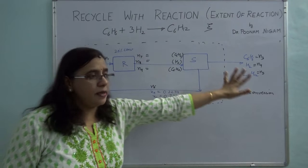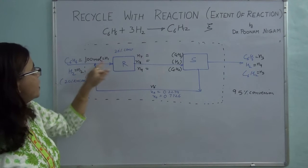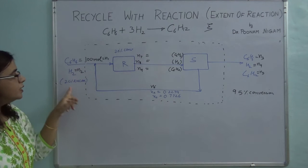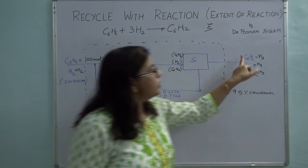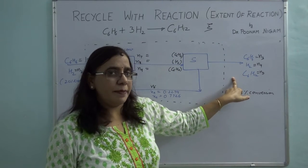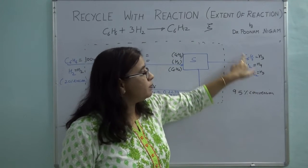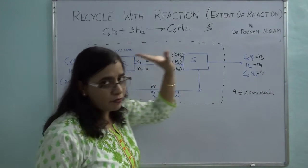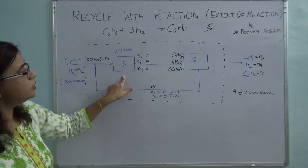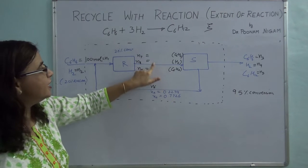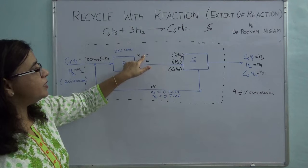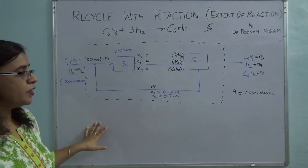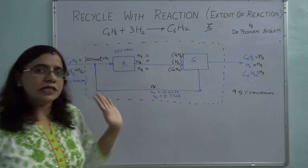The second step is to fully label the flow chart. N1 moles of benzene — that is 100 moles — is going in. N2 moles of hydrogen are in 20 percent excess. In the product stream, all three components are coming out: the product plus the unreacted components, labeled N3, N4, N5 for their respective molar flow rates. The product stream coming out from the reactor also contains all three components, labeled N7, N8, and N9 for benzene, hydrogen, and cyclohexane respectively. N6 is labeled as the recycle stream.